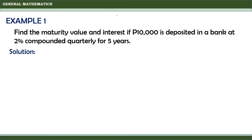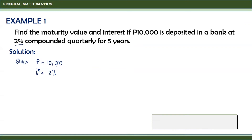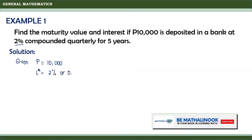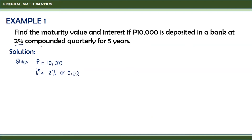The first thing we need to do is write down our given. From the problem, P is equal to 10,000. The annual interest rate I(M) is 2%, which in decimal form is 0.02. Since the interest is compounded quarterly, M is equal to 4, meaning the interest is compounded every 3 months or 4 times a year. And T is equal to 5 years.